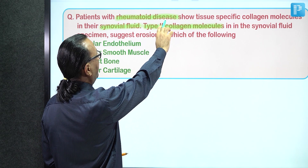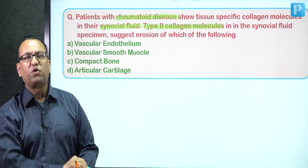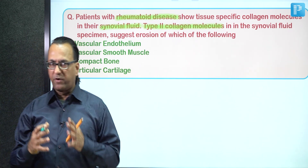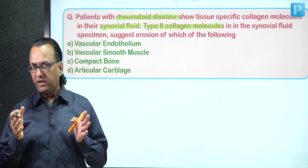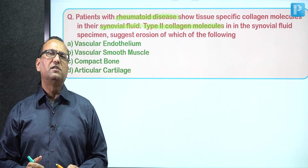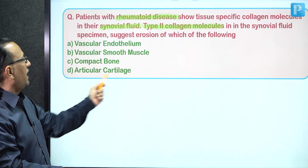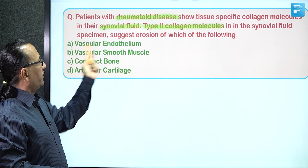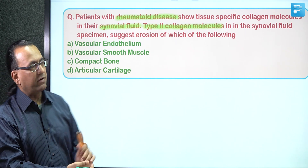Rheumatoid arthritis is an autoimmune inflammatory disease involving the synovial membrane. Initially, the synovial membrane undergoes hypertrophy with increased vascularity and synovial fluid secretion, and there is proliferation of granulation tissue. Later, the disease involves the articular cartilage and then the bone, so there are problems with vascular structures, bone, and cartilage.